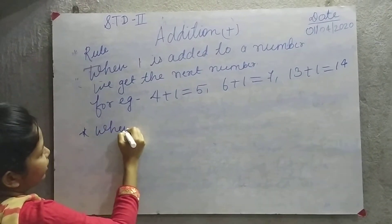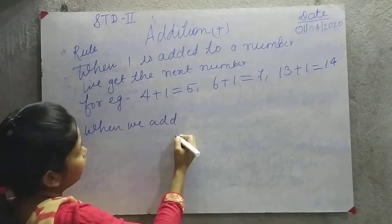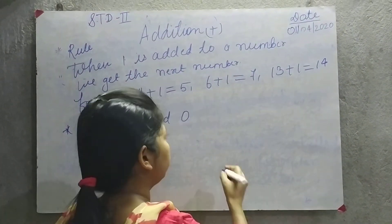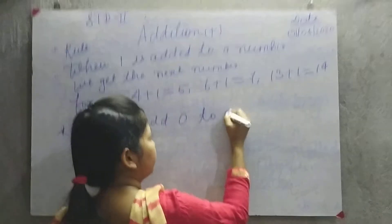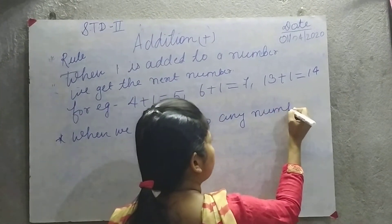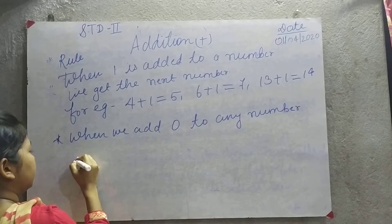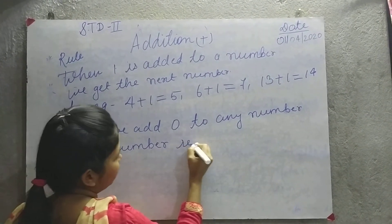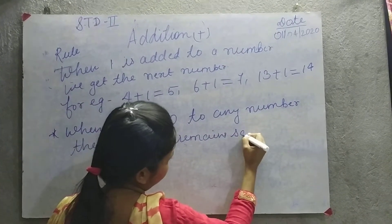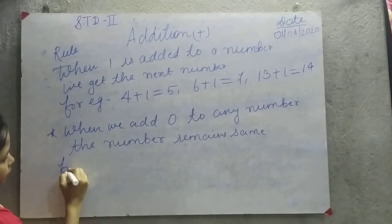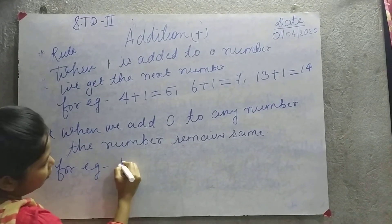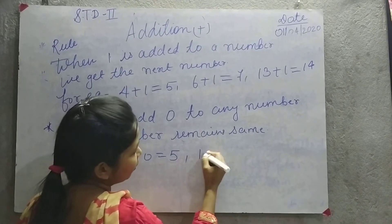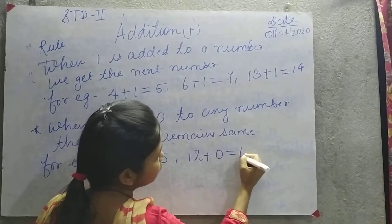When we add zero to any number, the number remains the same. For example: five plus zero is equal to five; twelve plus zero is equal to twelve; eighteen plus zero is equal to eighteen.